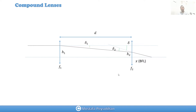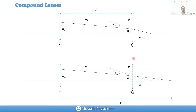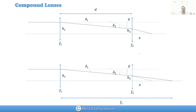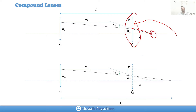In order to calculate that focal point, as always for a compound system, we image an object at infinity through lens f1. We don't consider f2 yet — we find the position of the image, and then that image becomes the object for f2, and we find the focal point or final image. We can use this technique for multiple lenses.